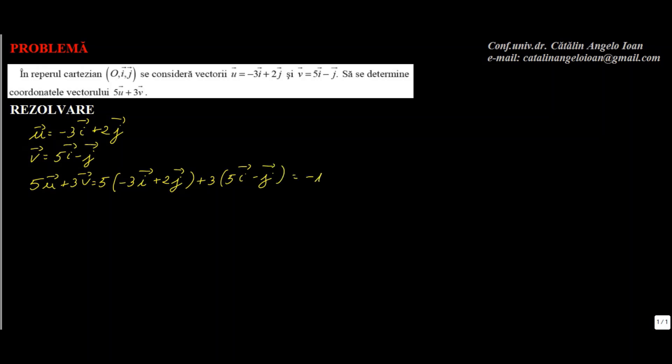Egal cu 5 ori minus 3 este minus 15i plus 5 ori 2 este 10j plus 3 ori 5 este 15i minus 3j. 15 se reduce și obținem 7j sau 0i plus 7j. Prin urmare coordonatele vectorului nostru 5u plus 3v vor fi coeficienții lui i și j de aici: 0 și 7. Și cu aceasta încheiem problema.